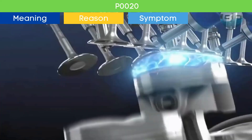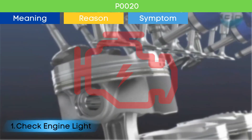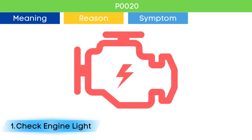Symptom number one: check engine light. The check engine light comes on if there are any active trouble codes related to the engine management system.